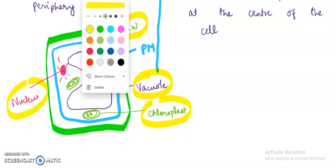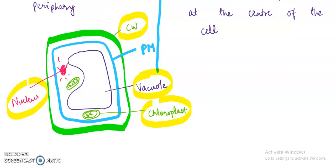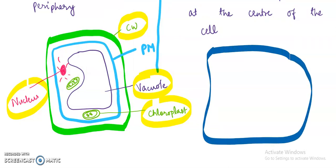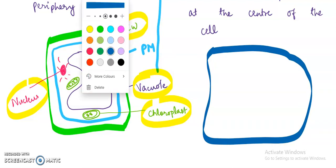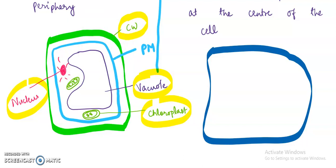Whereas in the case of animal cell we will just be making the plasma membrane. Along with that we will be making the nucleus which will be there in the center. And remember to make it in this way this is the nucleus.